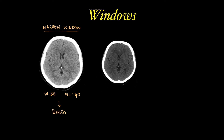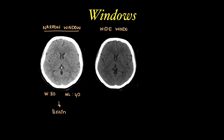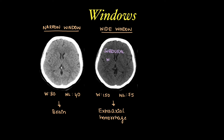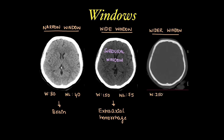On non-contrast CT brain, we can use three different windows to visualize three different structures. A narrow window with a window width of 80 and window level 40 is used to visualize the brain parenchyma. A narrow window with a window width of 150 and window level of 75 is used to visualize extra-axial hemorrhages, and this window is also called the subdural window. A wider window setting with window width 2500 and window level 500 is used to visualize bones and is hence known as the bone window.